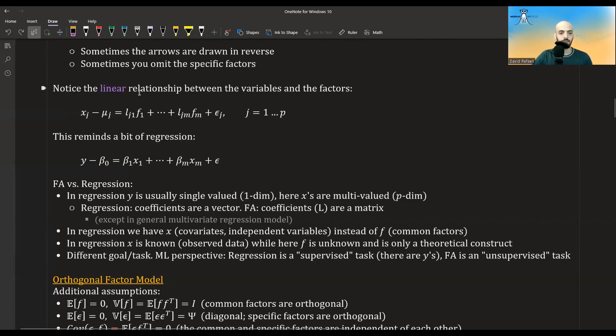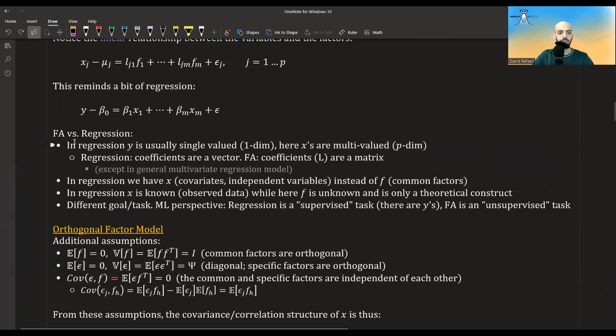And also, it's a different task altogether. So if we talk in machine learning terms, regression is a supervised task. You have the x's, and you have the y's. You have the labels. You have some ground truth values that you can compare your model to these ground truth values. Whereas factor analysis is an unsupervised task. You can't compare your model to some ground truth model. You can measure it in other ways, but you can't say, oh, my model really doesn't make mistakes, because there is nothing to compare your model to. Okay, so these are the differences between factor analysis and regression.